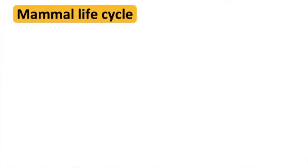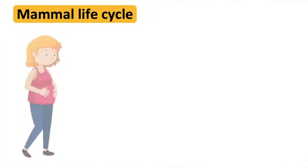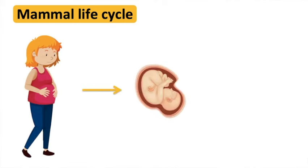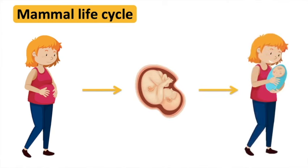For the mammal life cycle, development takes place inside the body of a female. A fertilised egg develops into an embryo and then a fetus. The female then gives birth to the baby. A human baby then goes through the life stages of childhood, adolescence, adulthood, and then old age.